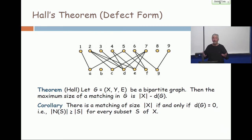When can I employ everybody? You can employ everybody if and only if the defect is zero. So in other words, if you can't employ everybody, then there's a set where the defect is positive.